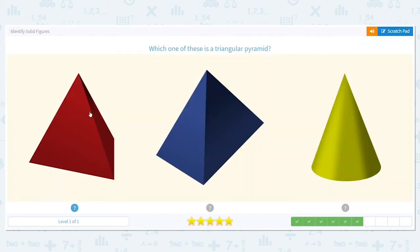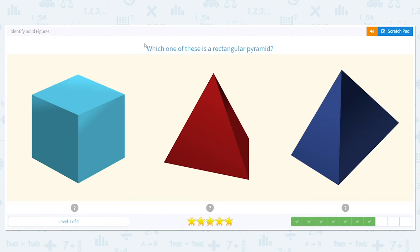Which one of these is a rectangular pyramid? We just pointed this out in the last question. Which is it? It's this guy because the base is a rectangle.